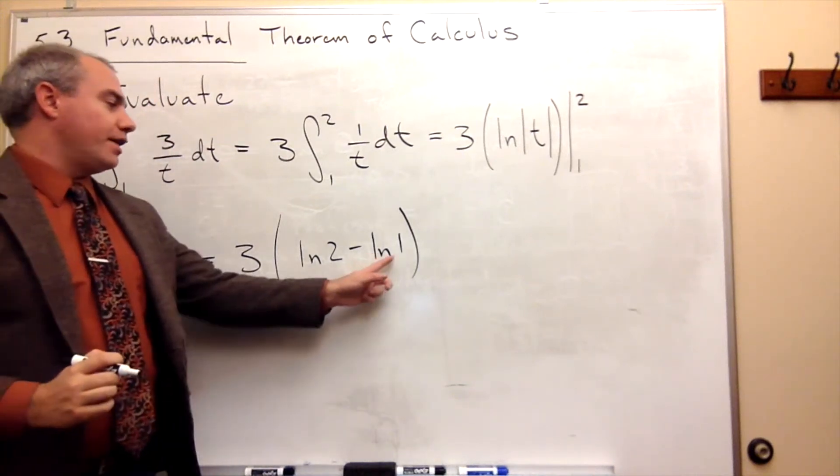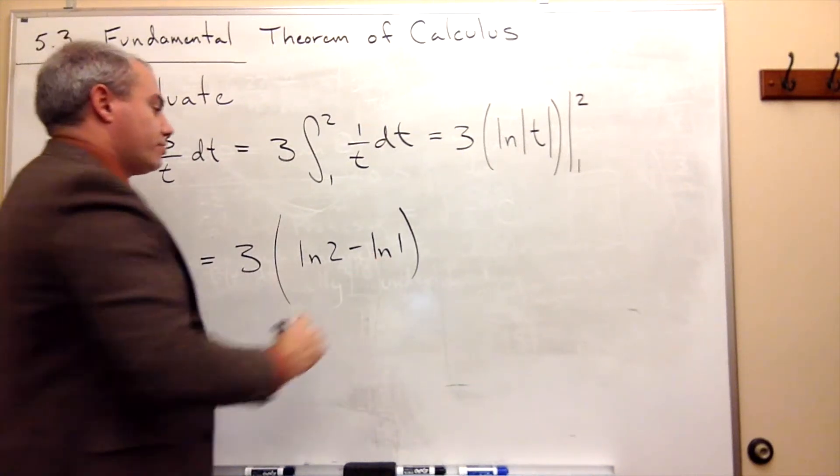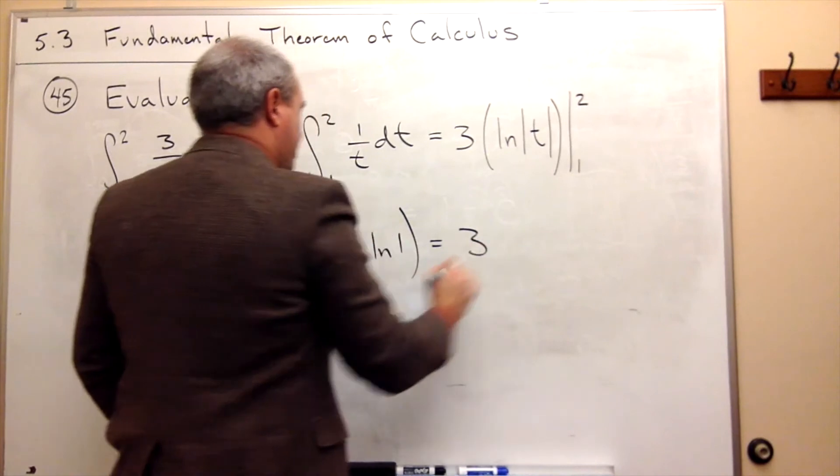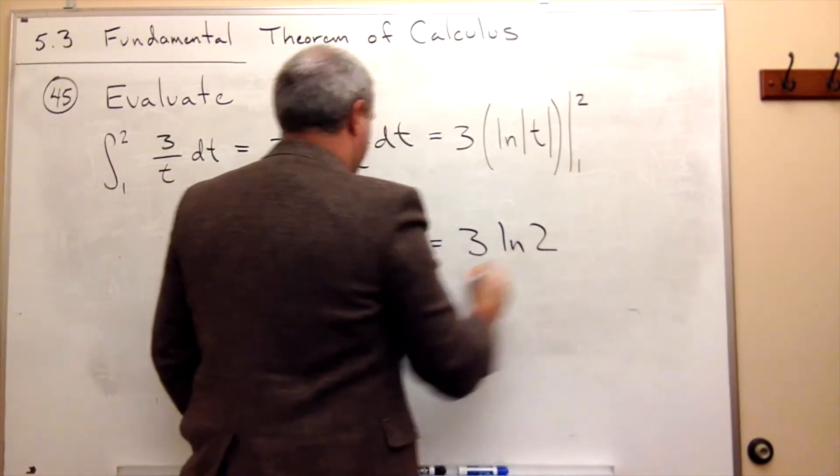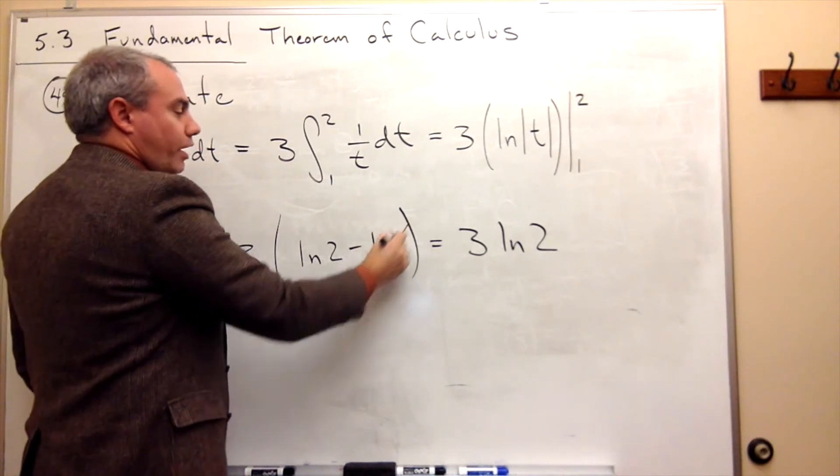But what's ln of 1? That's 0. So I just get 3 times ln of 2, because ln of 1 is 0.